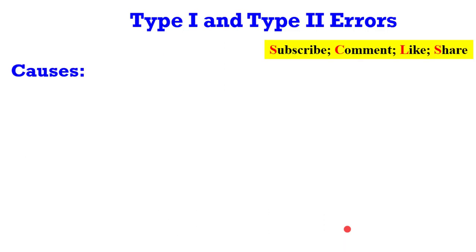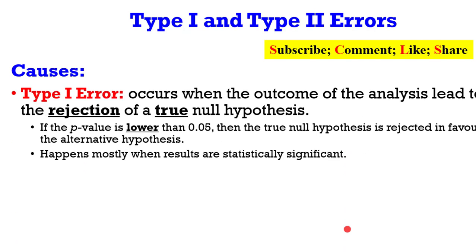Now let's look at the causes of type 1 and type 2 errors. Type 1 error occurs when the outcome of the analysis leads to the rejection of a true null hypothesis. If the p-value is lower than 0.05 — if that is the level by which you set your alpha — then the true null hypothesis is rejected in favor of the alternative hypothesis.